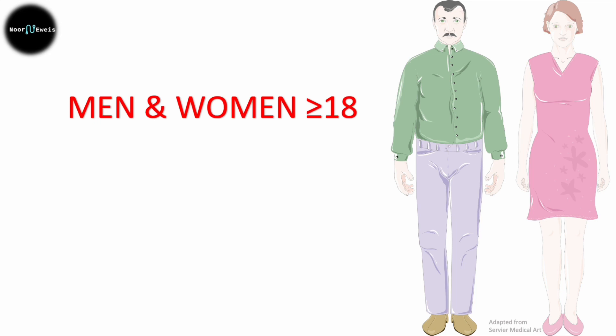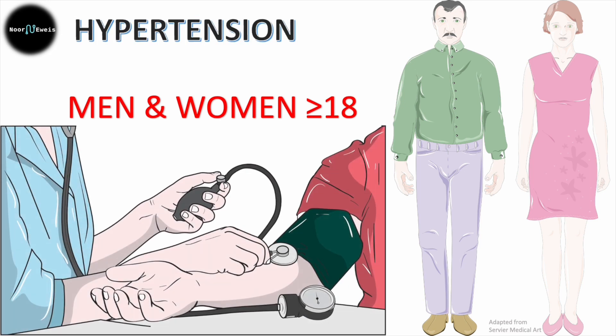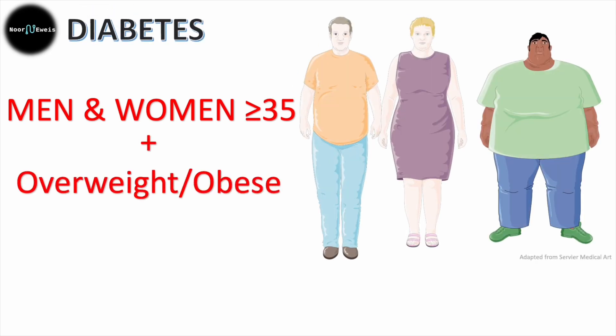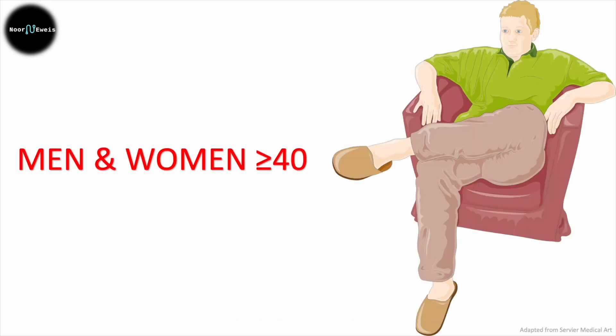Going in order of age: men and women 18 and up have to be screened for hypertension at any clinic visit. Moving up, men and women 35 and up who are overweight or obese have to be screened for diabetes with HbA1c or fasting blood sugar. This is younger than the standard recommendation of 45 and up, but because they're overweight or obese we screen them earlier — just like the patient we saw.